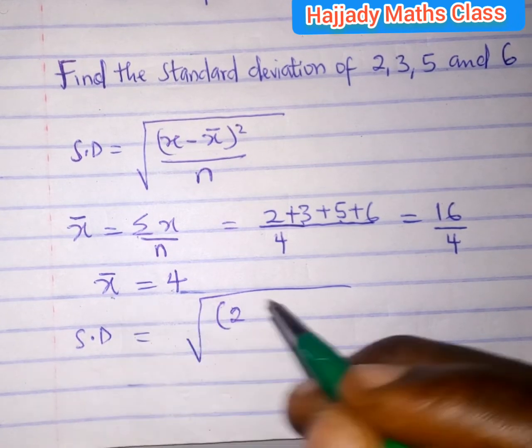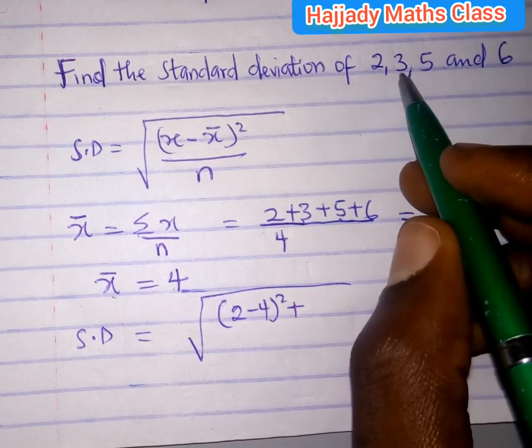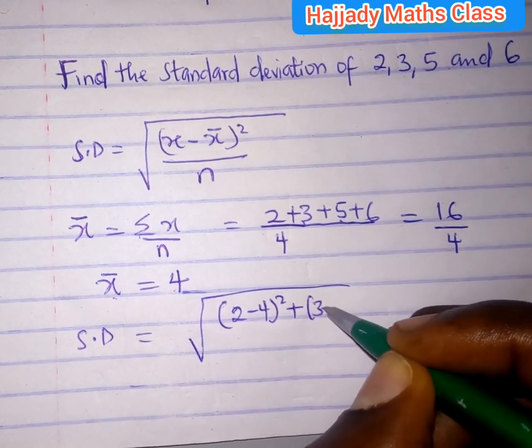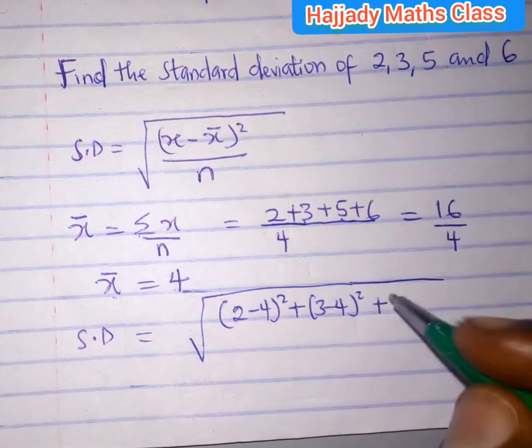plus the third, which is 5, minus the mean, all squared, plus the last, which is 6, minus the mean, all squared, everything all over 4.